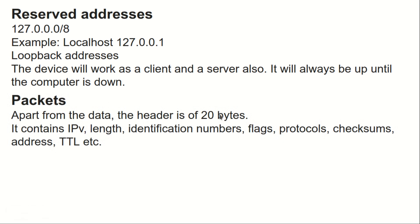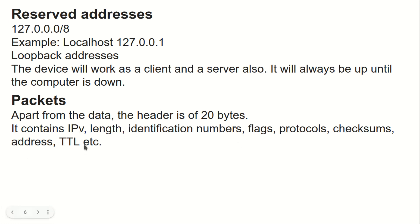Regarding packets: apart from the data, the header is 20 bytes. The packet header contains fields like IP version, length, identification numbers, flags, protocol, checksum, address, and TTL (Time to Live) — all things discussed in previous videos.